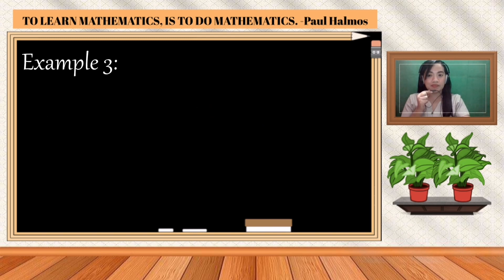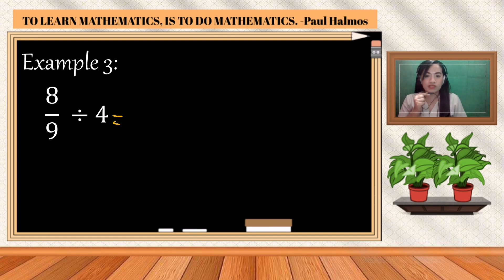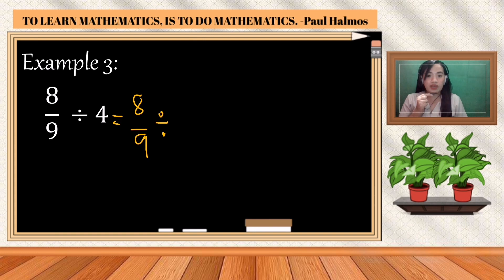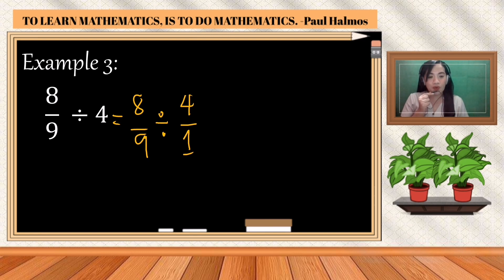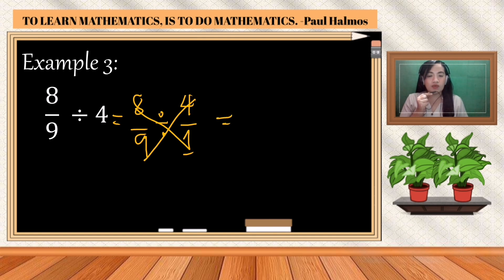Example number three: eight over nine divided by four. Using the short method, copy the dividend eight over nine and the operation. The denominator of a whole number is always one, so four becomes four over one. Do not get the reciprocal of your divisor if you are not using the long method. Now cross multiply: eight times one is eight, four times nine is thirty-six.